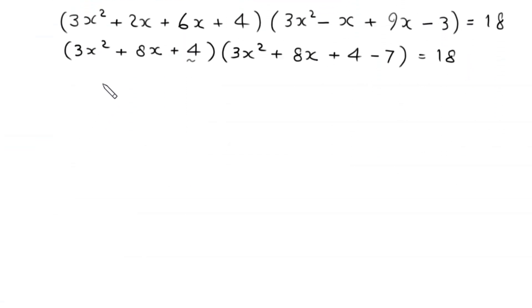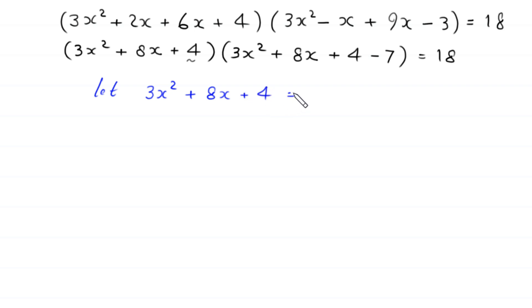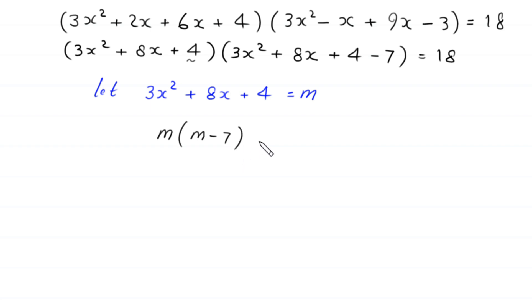Now we suppose that 3x squared plus 8x plus 4 is equal to m. So this equation will become m times (m minus 7) is equal to 18.